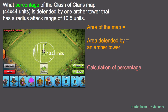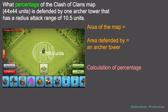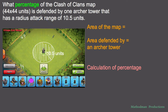Let's start with the area of the map. The map is made out of a square that has a length of 44 and a width of 44. To find the area of a square, all I have to do is length times width, which is 44 times 44, and that gives me 1,936 square units.